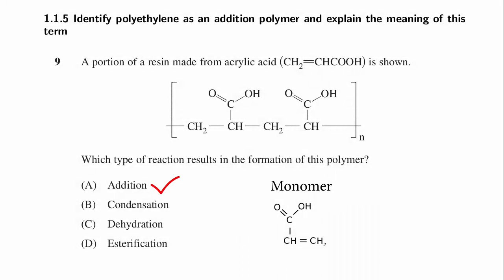Notice that they've specifically chosen a polymer with a carbonic acid group in order to muddy the waters a little bit and get people to jump for the esterification answer, perhaps if they didn't really know and were guessing. Tricks like these are becoming more and more common in the HSC chemistry exam, so watch out for them.